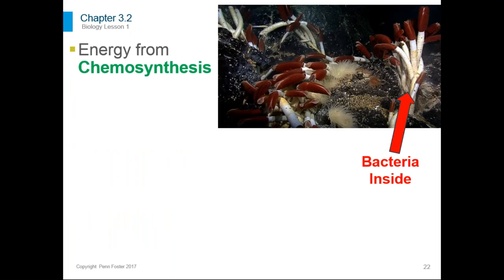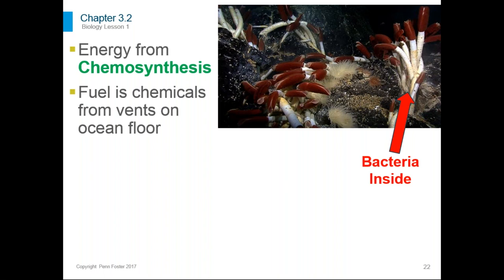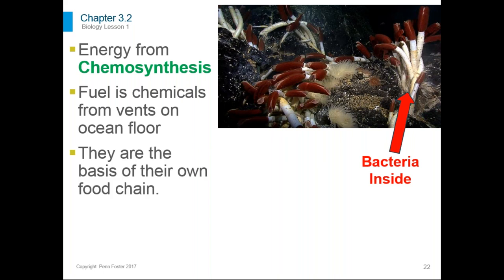There is one type of primary producer that doesn't rely on the sun. Some bacteria use a process called chemosynthesis to take energy from chemicals and store it. They live near hot thermal vents deep in the ocean and use inorganic chemicals around them to make energy-storing molecules. Their fuel is these inorganic chemicals, and they are the basis of their own food chain with primary consumers that eat them — forming an entire ecosystem fueled by chemosynthesis.